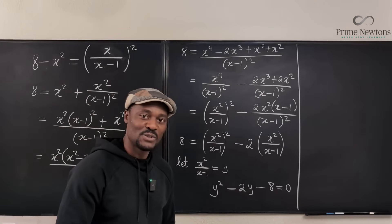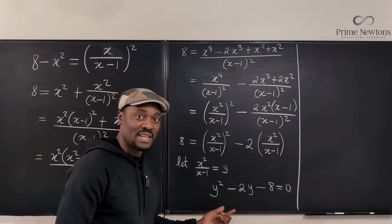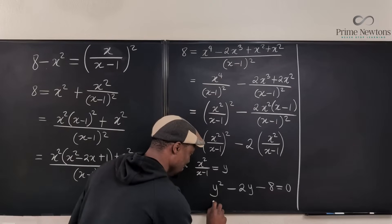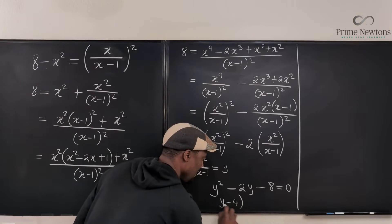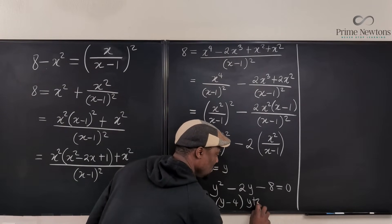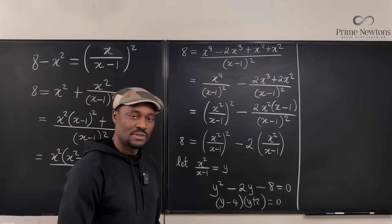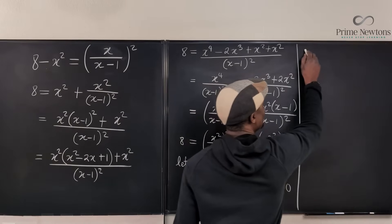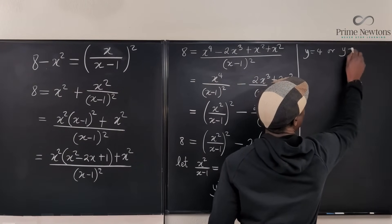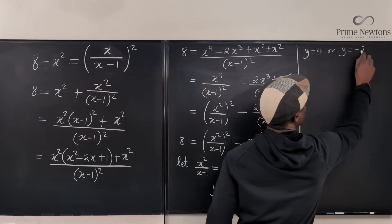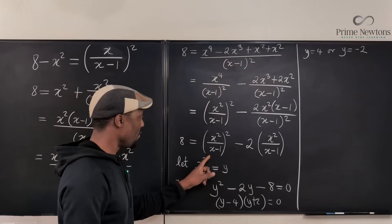Now we have y squared minus 2y minus 8 equals 0. Let's factor it: this is (y minus 4)(y plus 2) equals 0. We found two values of y: y equals 4, or y equals negative 2. Those are the solutions to this quadratic equation.